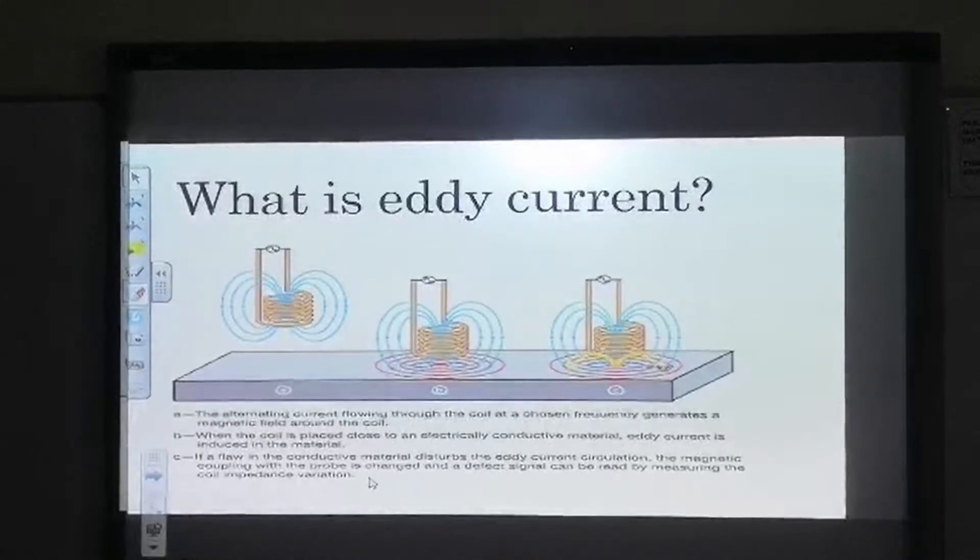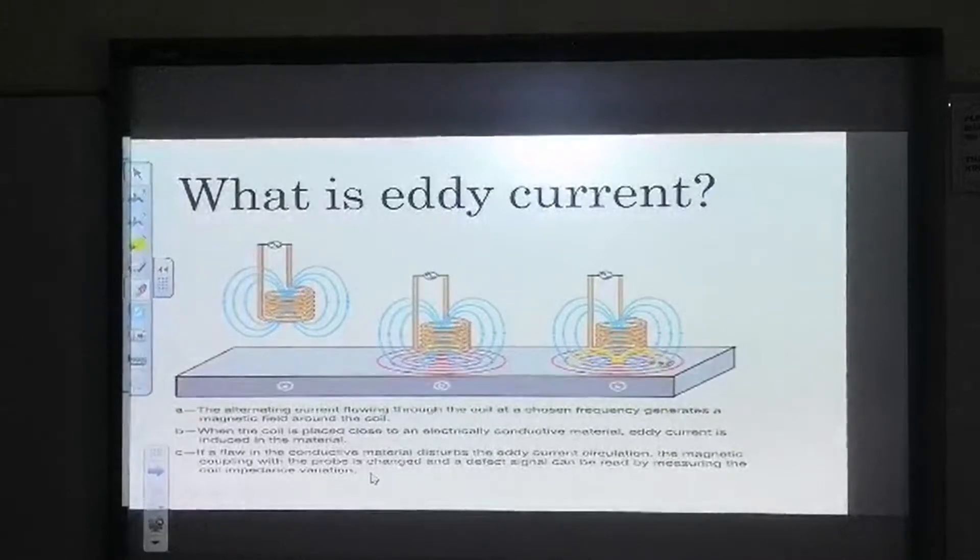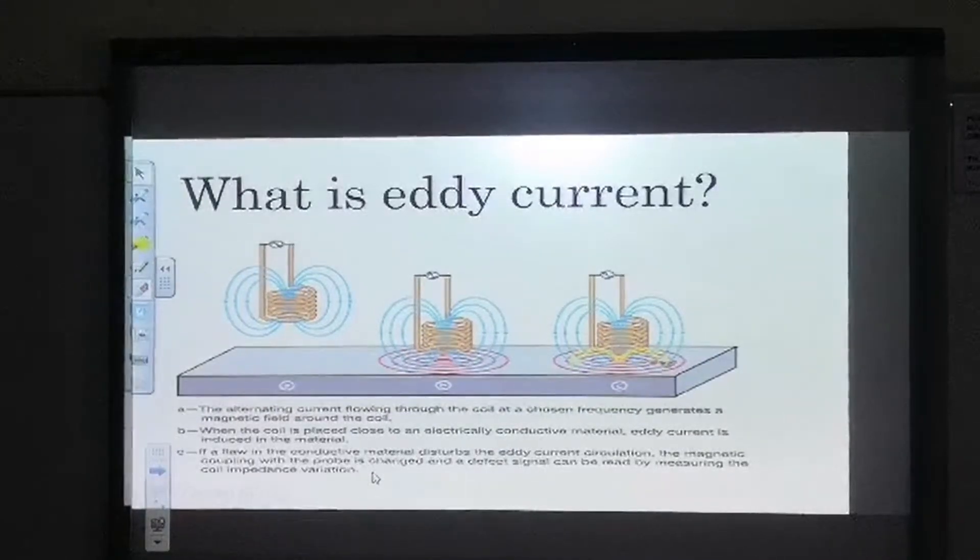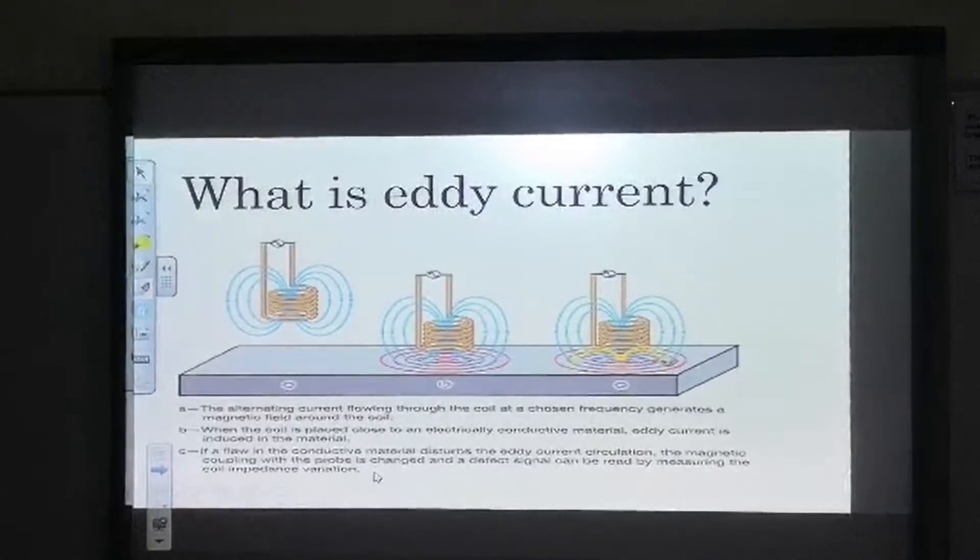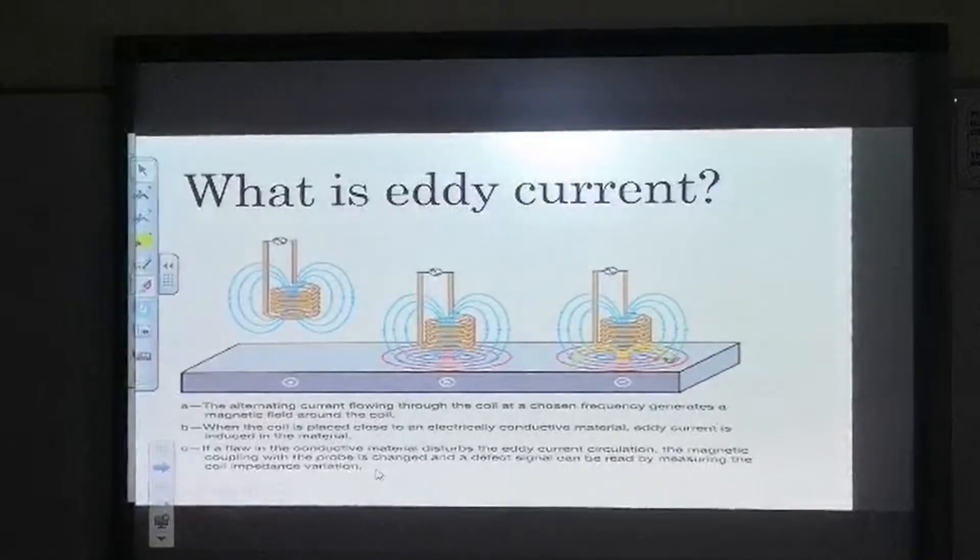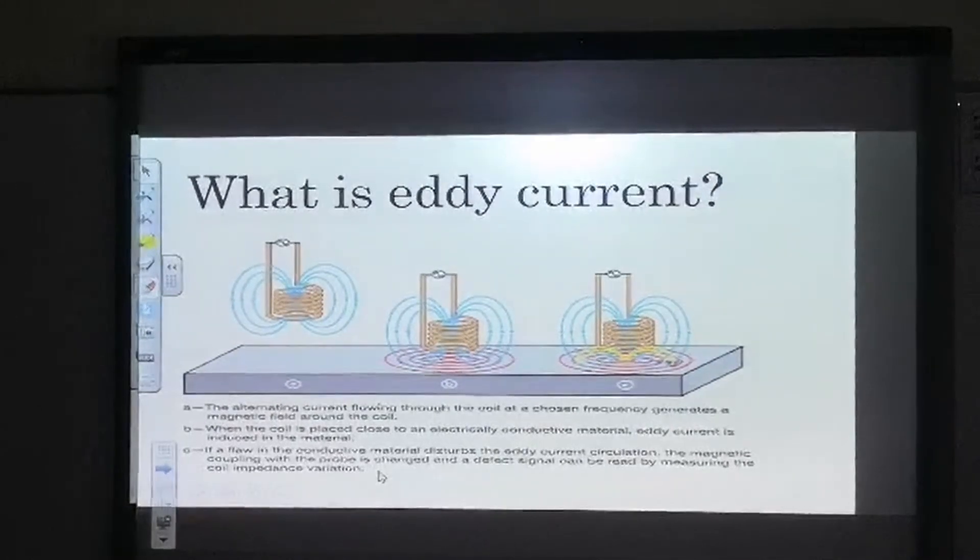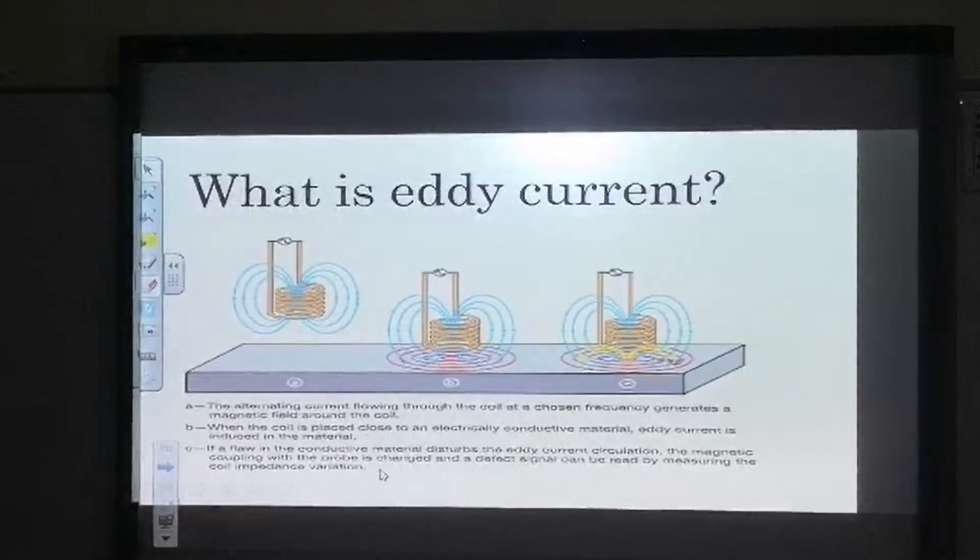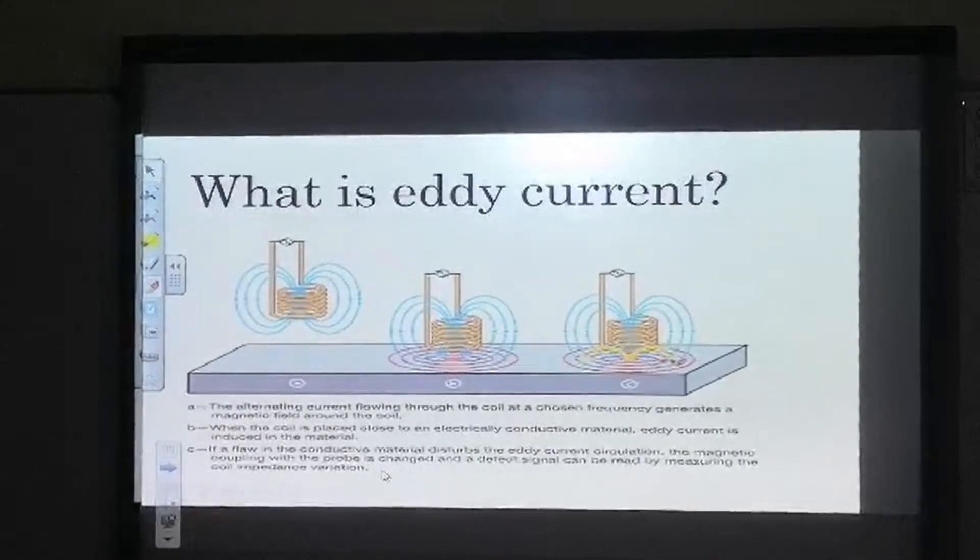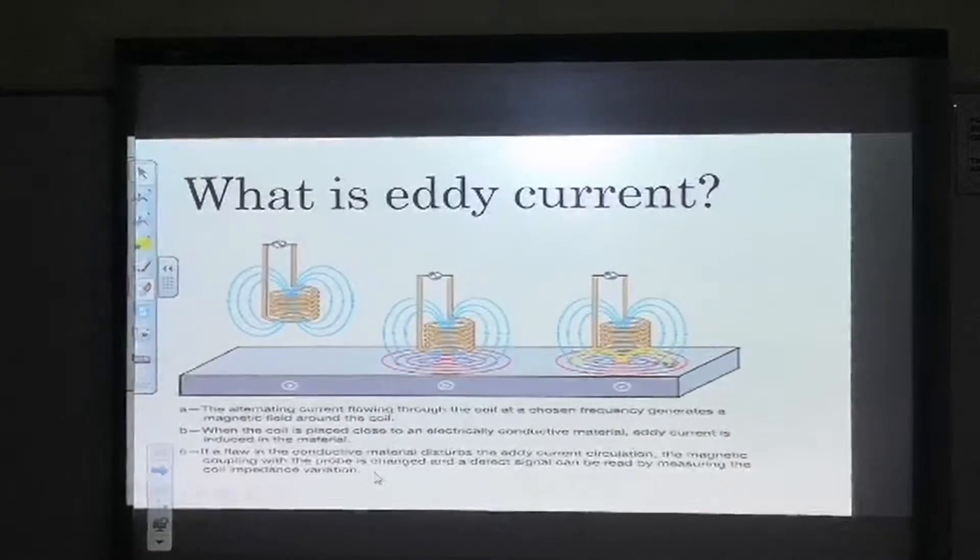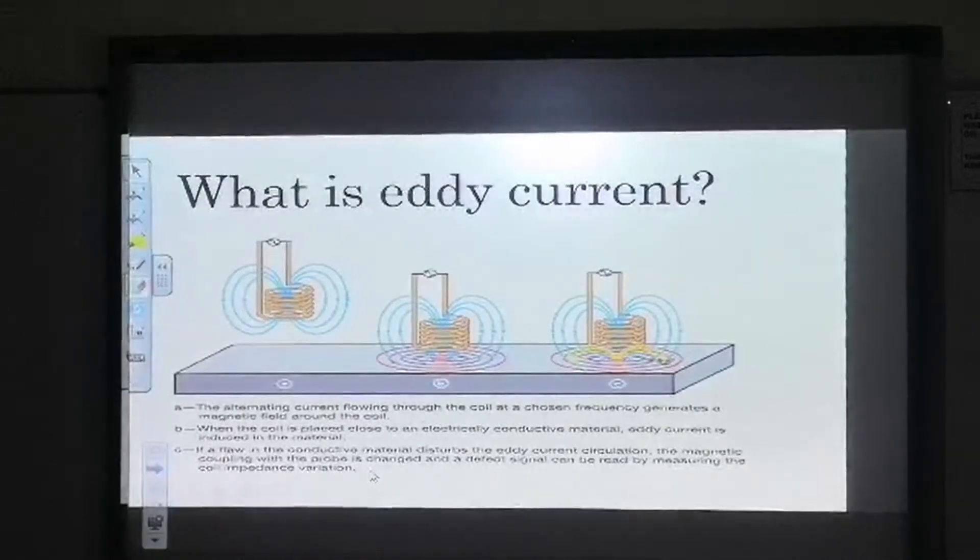The size of the eddy current is proportional to the size of the magnetic field, the area of the loop, and the rate of change of magnetic flux, and inversely proportional to the resistivity of the conductor. Like any current flowing through a conductor, an eddy current will produce its own magnetic field.